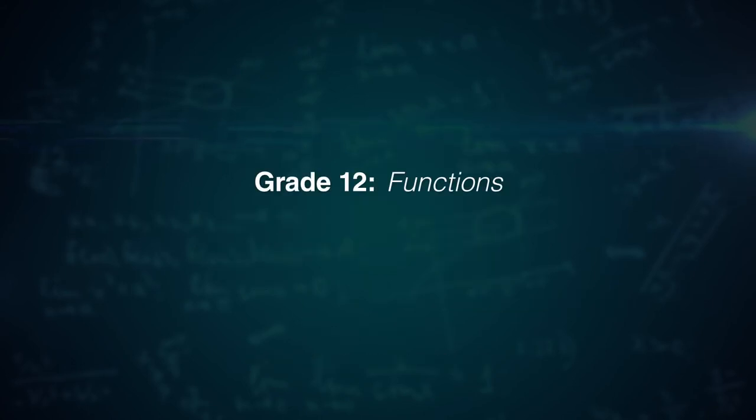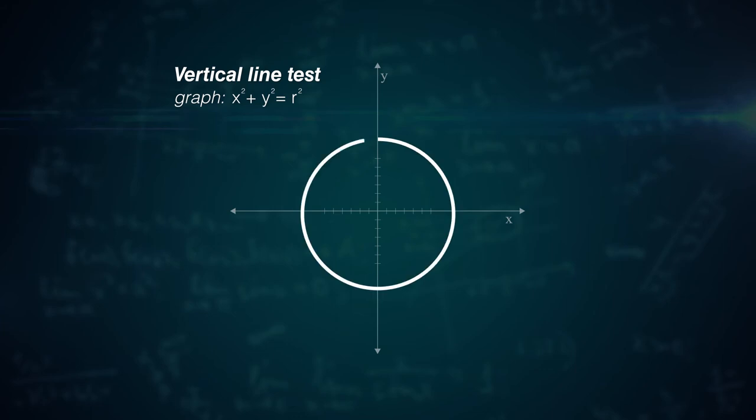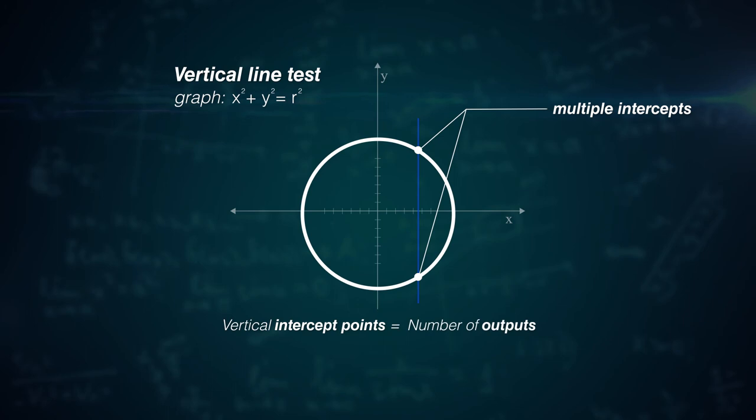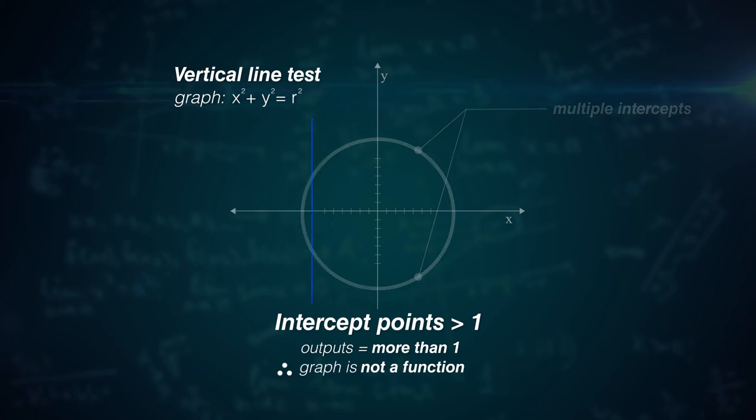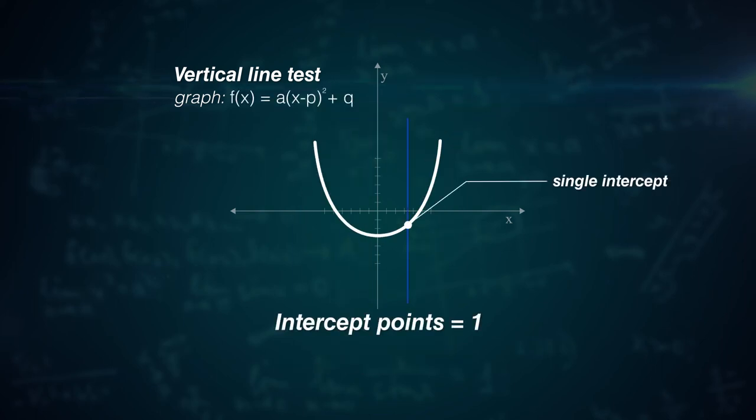In grade 12, this ties into the vertical line test which is used to prove if a graph is a function or not. This can be done by moving a vertical line across the graph and determining the number of intercept points we have. The number of intercepts the graph has is equal to its number of outputs. Therefore, if there is more than one intercept, there are many outputs and the graph is not a function. However, if there is only a single intercept, then there is only a single output and the graph is therefore a function.